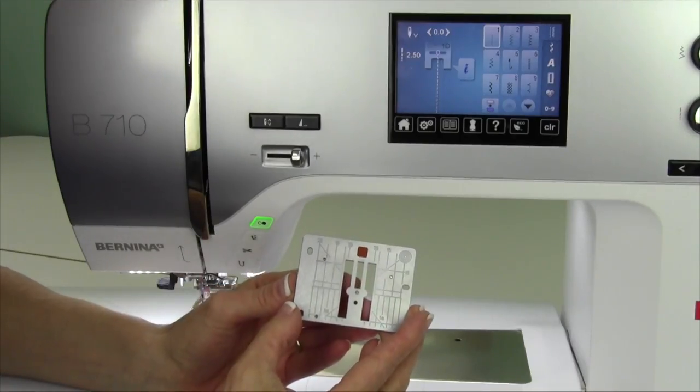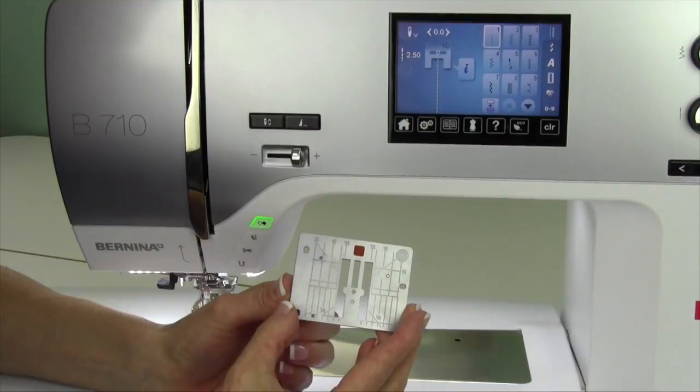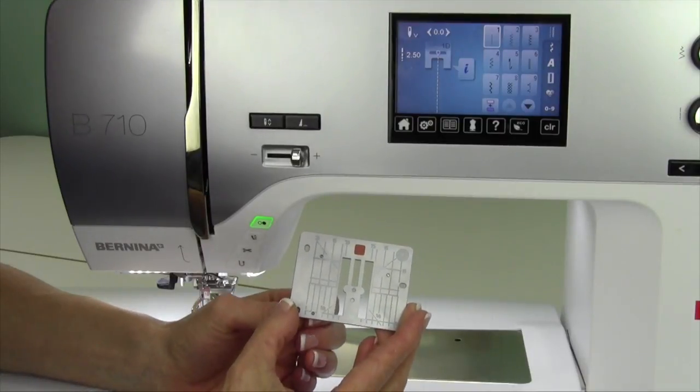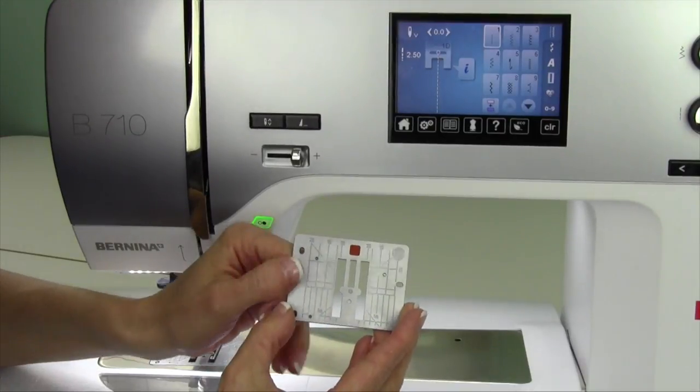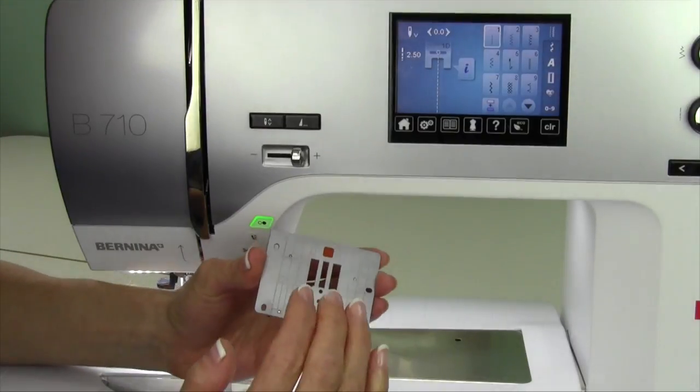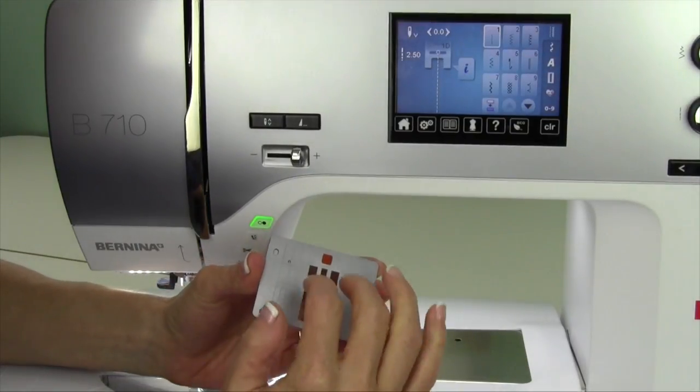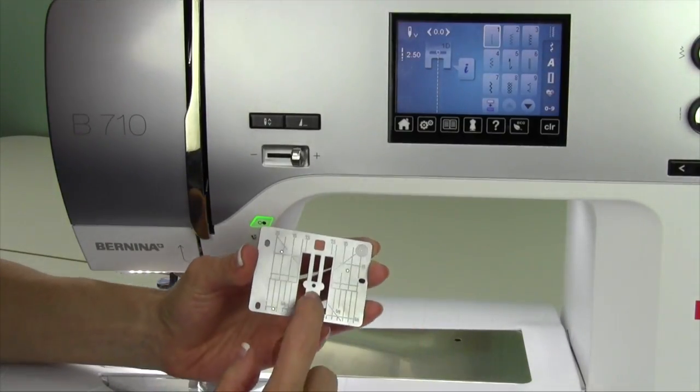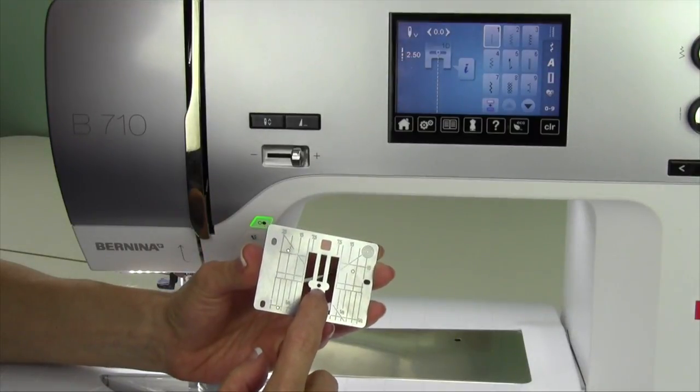A straight stitch throat plate is an optional accessory that I love to use for machine quilting, machine piecing, or any time I'm working with fine fabrics that might have the tendency to dip into the opening of a large throat plate. Notice here there is a single hole.